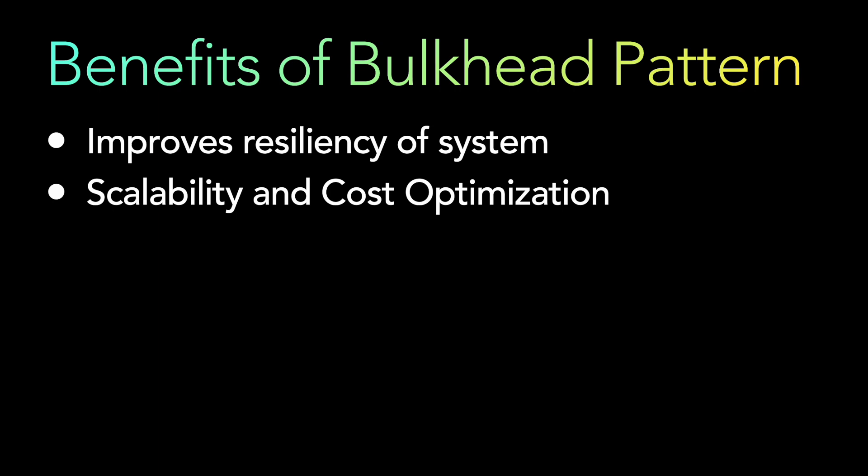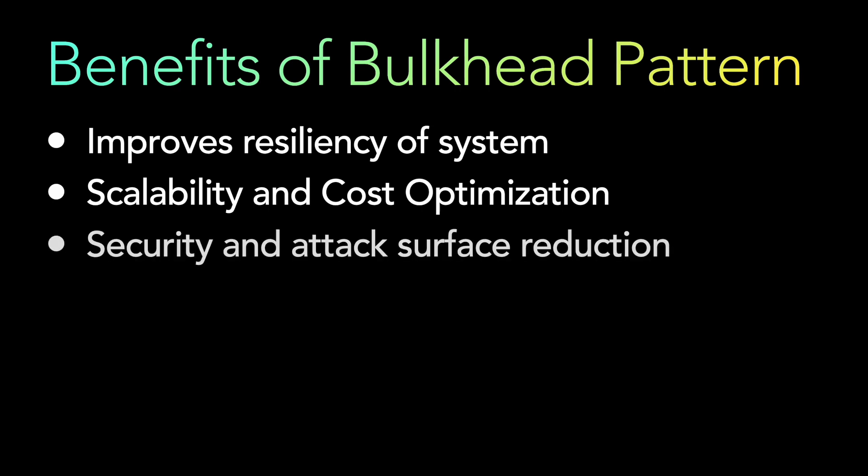The second benefit is scalability and cost optimization. The bulkhead pattern can help you scale your system more effectively because you have isolated, independent parts. You can scale each bulkhead independently without worrying about the impact on other parts. For example, the authentication service might use a document database while the payment service uses a SQL database — one with provisioned concurrency, another with on-demand auto scaling. This independent scaling also helps reduce overall cost.